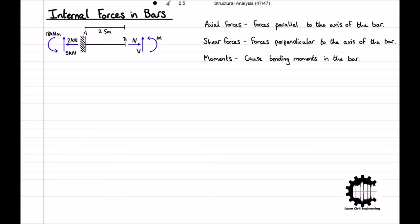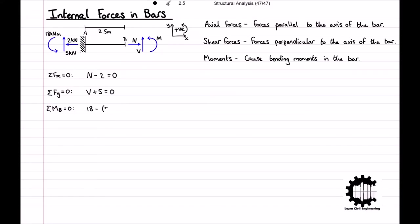To compute the unknown internal forces, we must apply the conditions for equilibrium, where the sum of all horizontal forces must equal 0, the sum of all vertical forces must equal 0, and the sum of all moments relative to a point must equal 0, and we have chosen that point to be B. Taking the x-coordinate direction to be positive, the sum of all horizontal forces is equal to N minus 2, which equals 0. Taking the y-coordinate direction to be positive, the sum of all vertical forces is equal to V plus 5, which equals 0. Taking the anti-clockwise rotation direction to be positive, the sum of all moments relative to point B is equal to 18 minus 5 times 2.5 plus M, which equals 0. So N is equal to 2 kN, V is equal to negative 5 kN, and M is equal to negative 5.5 kNm.